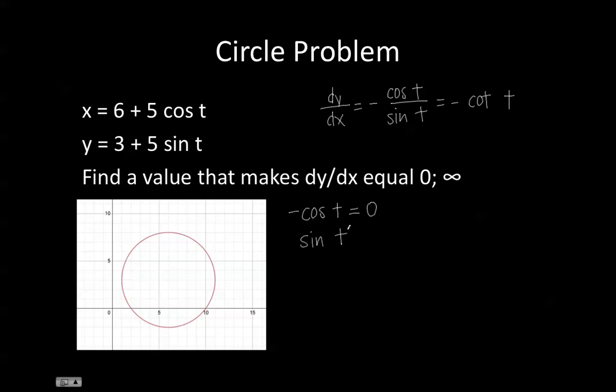And sine t cannot equal 0, otherwise we would have an indeterminate form. The values of t that make cosine t equal 0 are pi divided by 2, 3 pi divided by 2, and so on.